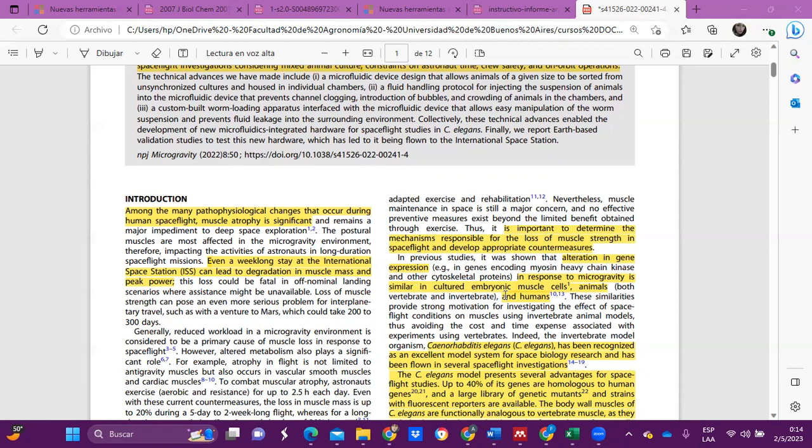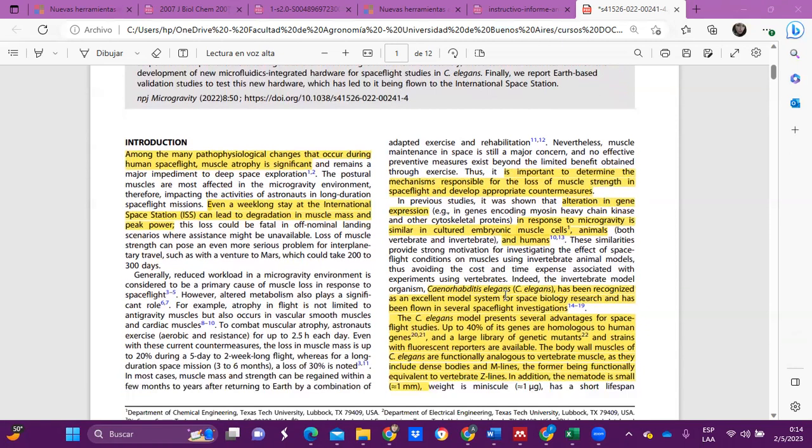Most important studies have been carried out in the C. elegans model because it presents several advantages for spaceflight studies. Up to 40% of its genes are homologous to human genes, and a large library of genetic mutants and strains with fluorescent reporters are available.